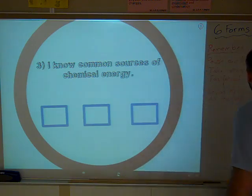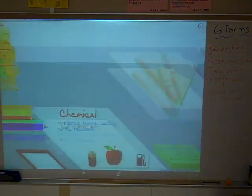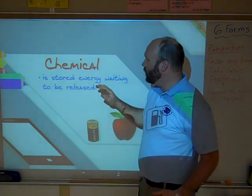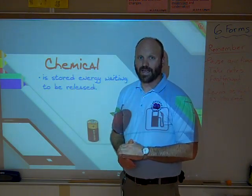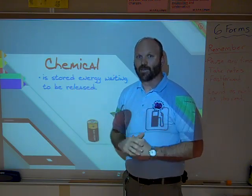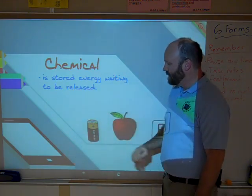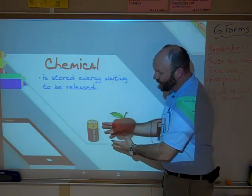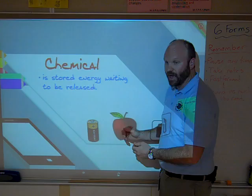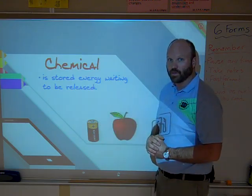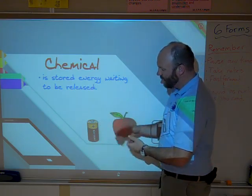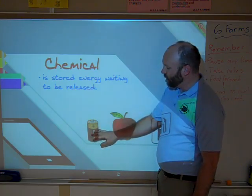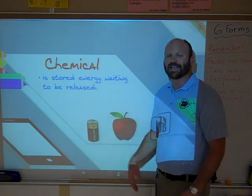You should have copied down your learning goal. Chemical energy — this is a simple one today. It is stored energy waiting to be released. Three easy examples to remember are batteries. Inside a battery there is chemical energy — it's not doing anything until you plug it into your video game or CD player. It's stored energy waiting to be released. A battery uses a chemical reaction with substances inside to release electricity.